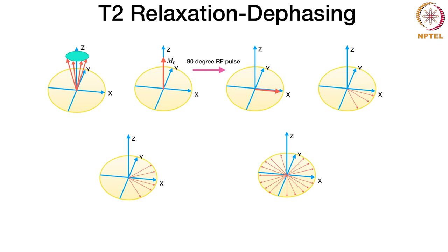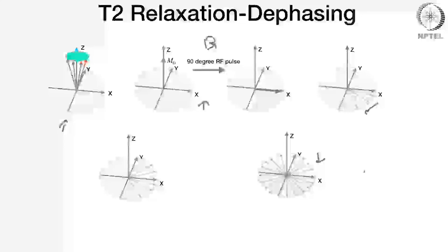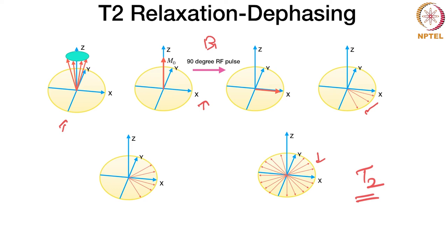Once the magnetization is tipped into the plane and starts to dephase, you can still get an induced signal — and that signal is called Free Induction Decay (FID). The magnetization is tipped into the plane and is rapidly precessing, leading to a voltage in a coil that starts to decay to zero as the transverse component decays. This process is characterized by the time constant T2, and this is where the T2 contrast comes from.